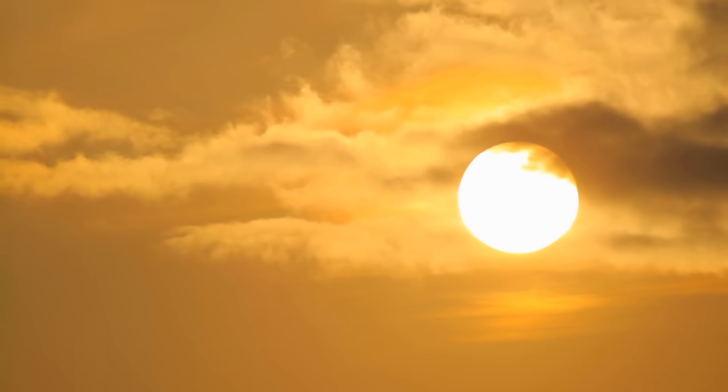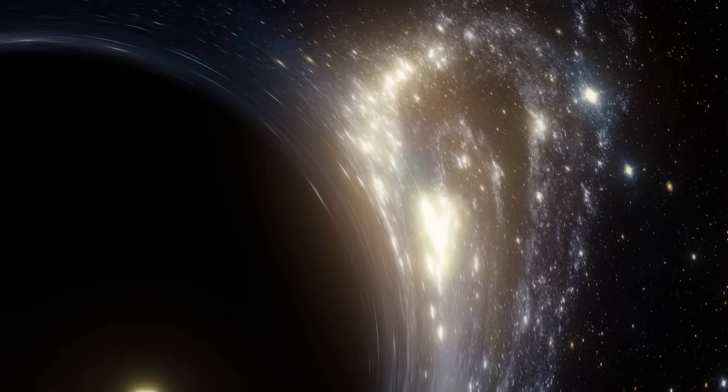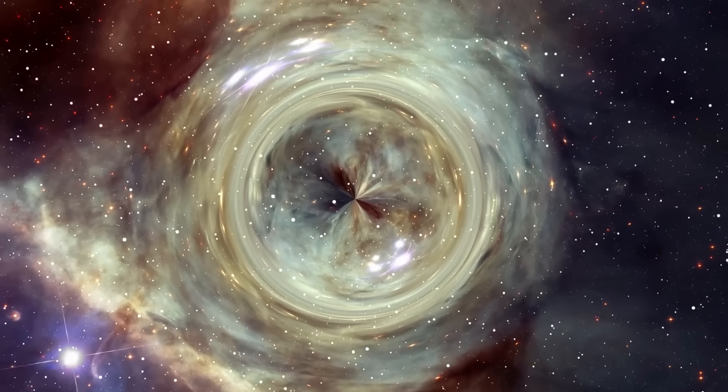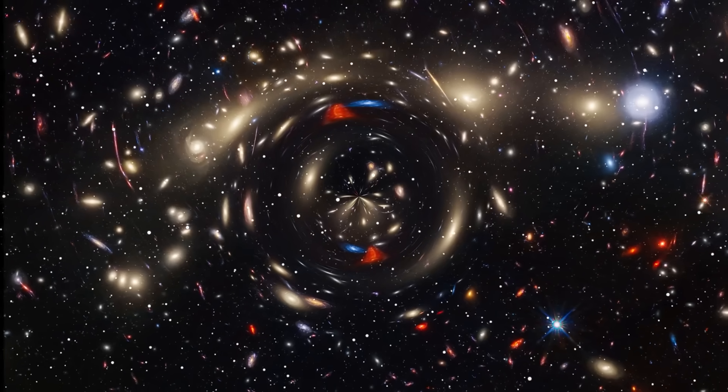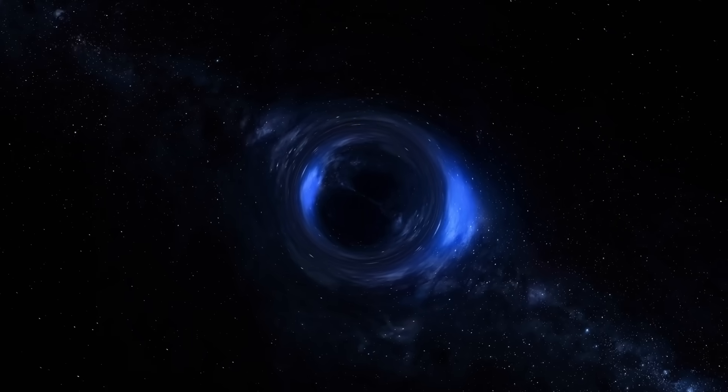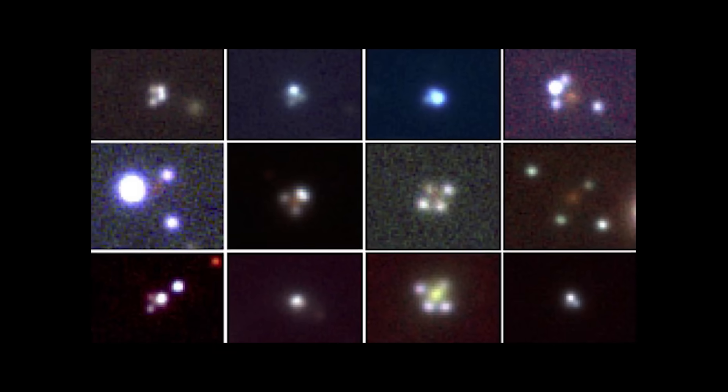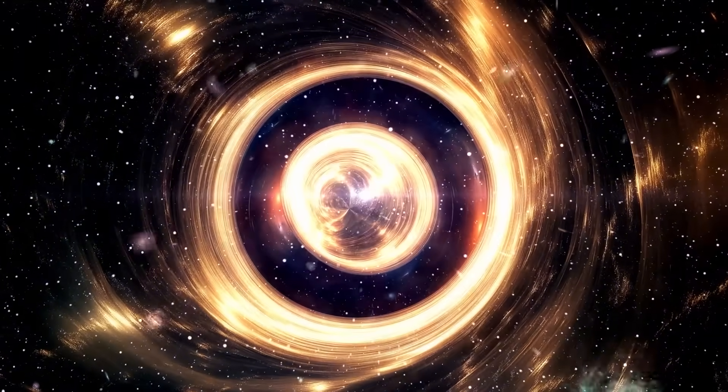To put that into perspective, if our sun were the size of a grain of sand, this black hole would be as big as a house. This intermediate mass black hole provides a crucial missing link in our understanding of how black holes evolve and grow over cosmic time. Are these the seeds from which supermassive black holes grow? Or are they the result of smaller black holes merging over billions of years? The answers to these questions could revolutionize our understanding of galactic evolution and the life cycles of black holes.